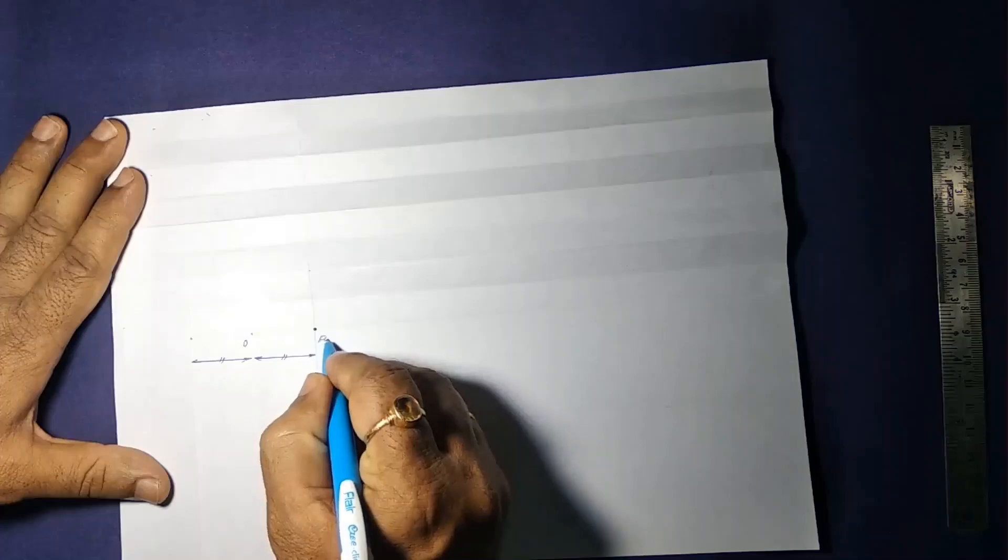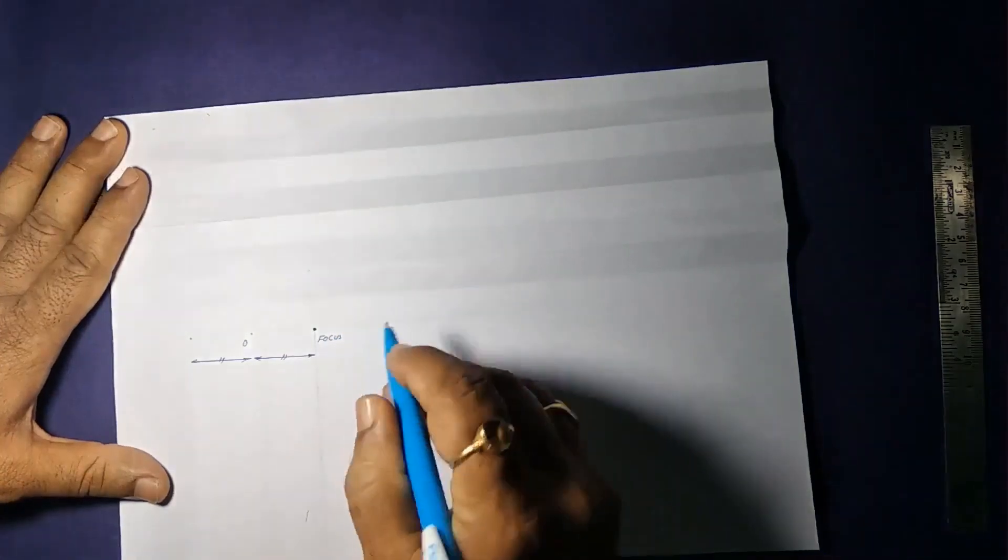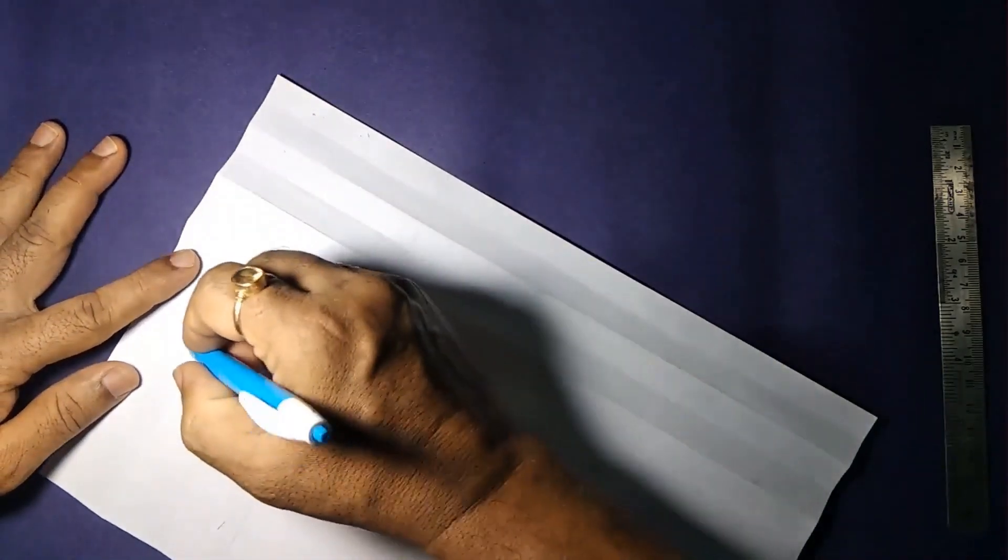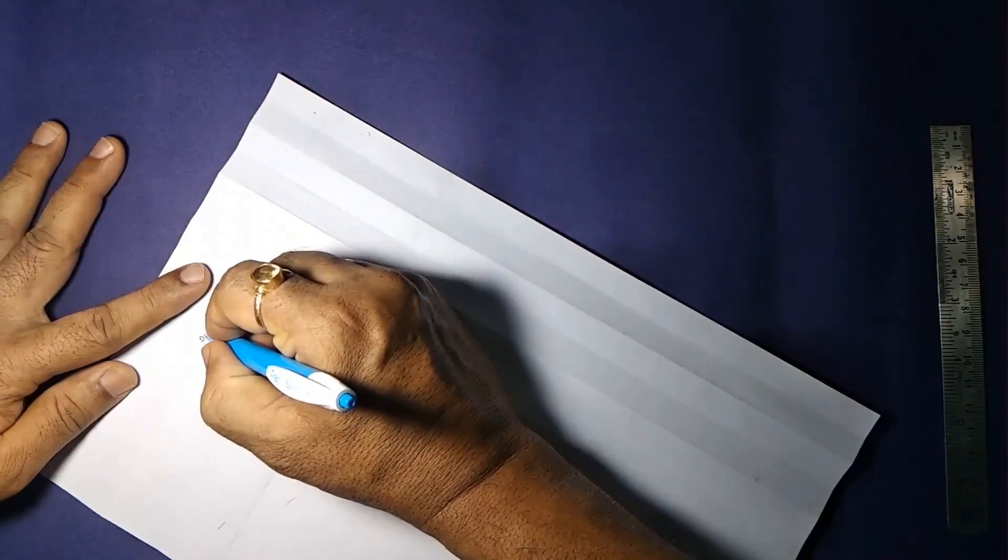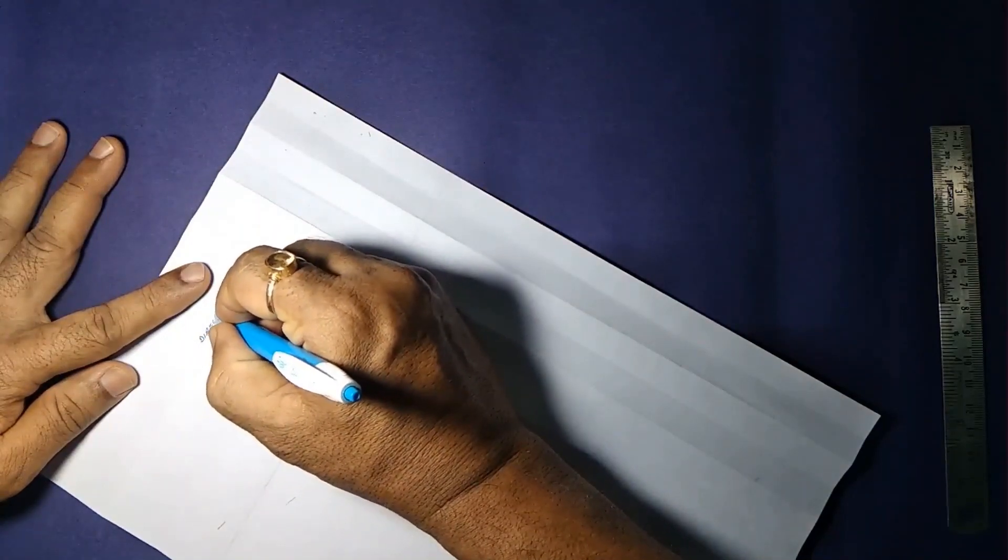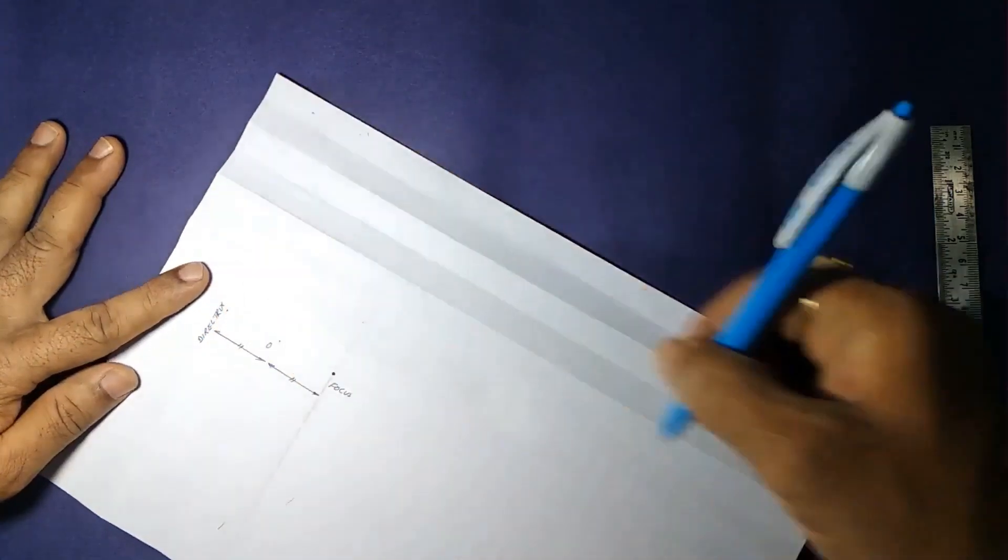And now there are many horizontal lines. Now let us mark this point as focus and the vertical line, the first one, as the directrix.